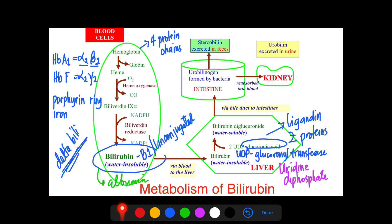This process forms bilirubin diglucuronide, also called B2, which is conjugated bilirubin and is already water-soluble. The conjugated bilirubin (B2) can then be excreted into the bile and into the small intestine, where there is little absorption of the bilirubin molecules.